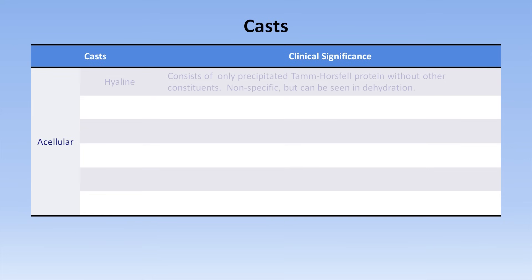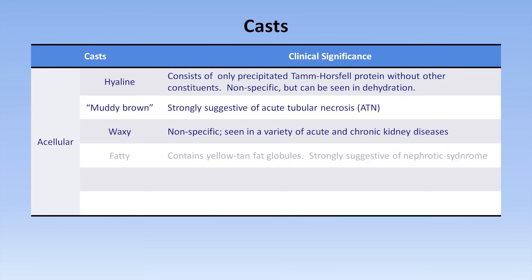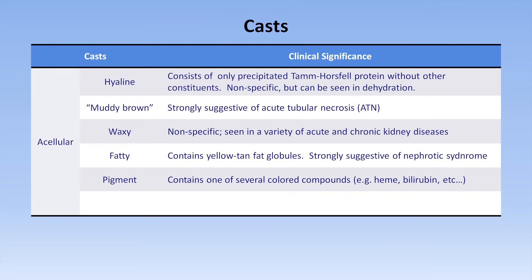There are many different types of casts divided into acellular and cellular categories. The most common casts are hyaline casts, which consist of precipitated protein without other constituents. They are nonspecific but can be seen in dehydration, where the urine is of low flow and abnormally concentrated. So-called muddy brown casts are strongly suggestive of acute tubular necrosis. Waxy casts are nonspecific and are seen in a variety of acute and chronic renal diseases. Fatty casts contain yellow-tan fat globules and are strongly suggestive of nephrotic syndrome. Pigment casts contain colored compounds such as heme or bilirubin, and granular casts are believed to result from degeneration of cellular casts.